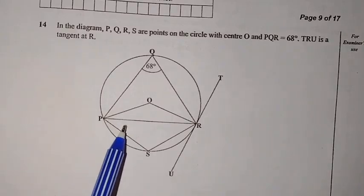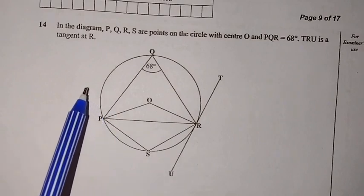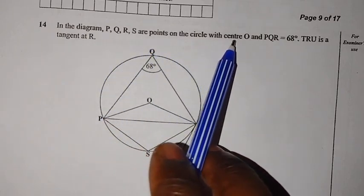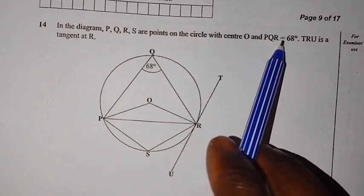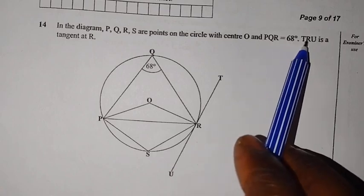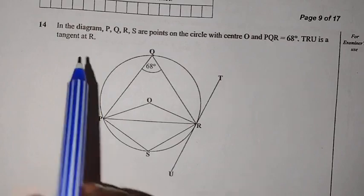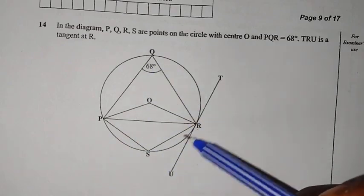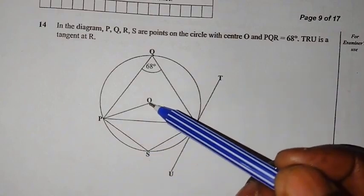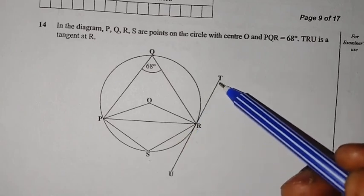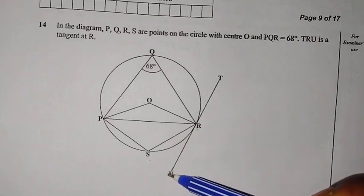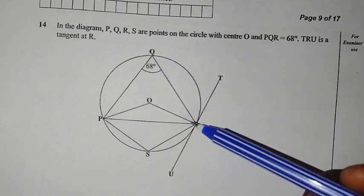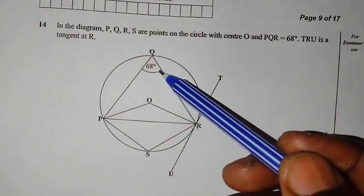Here we have a question that is coming from a circle theorem. The question reads: in the diagram, P, Q, R, S are points on the circle with the center O, and PQR is equal to 68 degrees. TRU is a tangent at R. This is the circle that is presenting the points P, Q, R, S. We have been told that O is the center, then TRU is the tangent at point R. Then we have angle PQR, meaning that the angle at Q is 68 degrees.